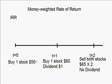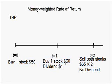Let's look at one example. Assume that today your account buys a stock for $50. One year later, the stock becomes $60, but you want to buy more, so you buy another one for $60. At that same time, they also pay out dividends of $1 for the stock you are holding. And two years later, you decide to sell both of the stocks, and in that year there's no dividend payout.